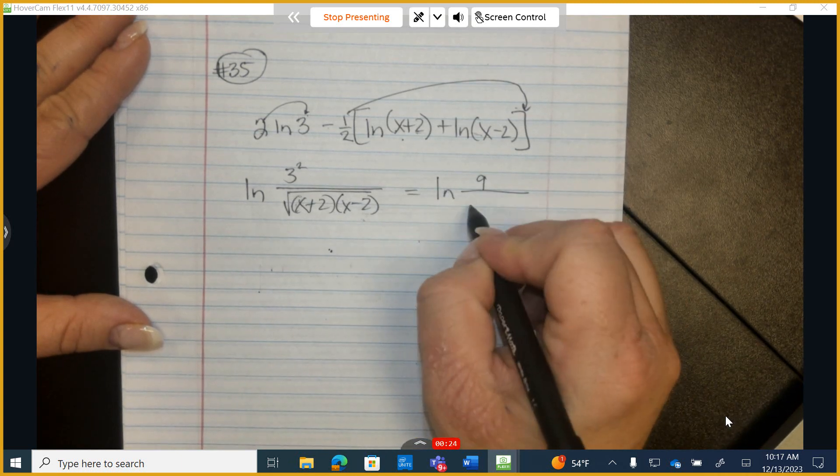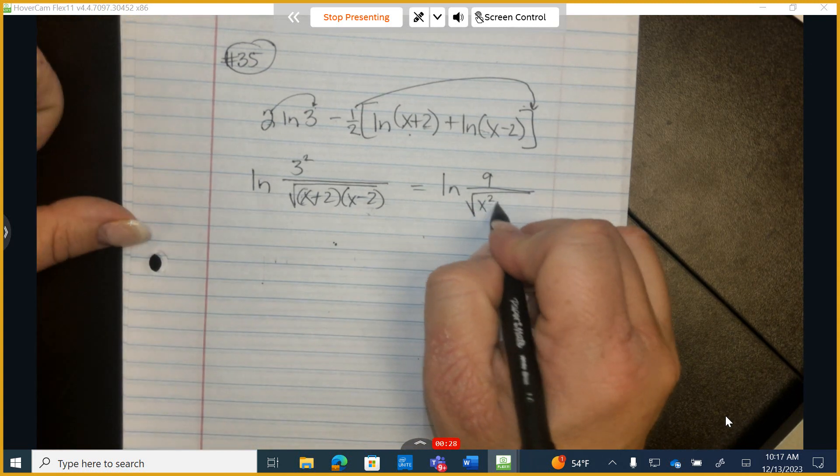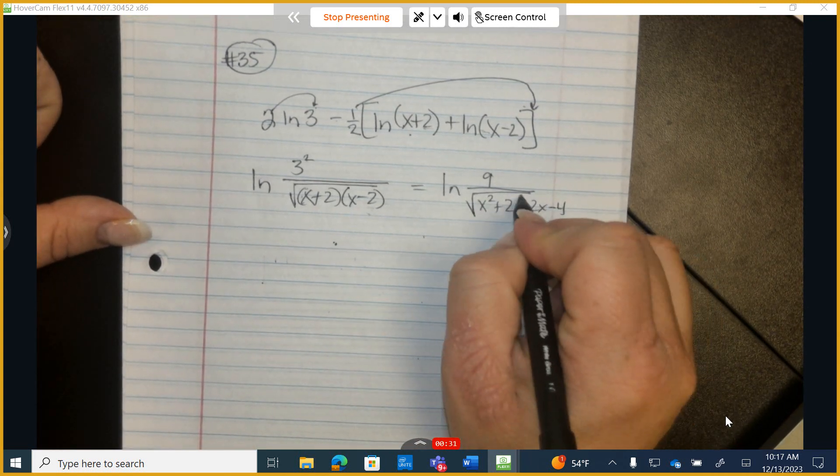So ln of 9 over, on the bottom, when I multiply this, I get x squared plus 2x minus 2x minus 4.